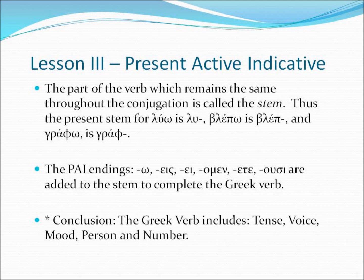Before we finish this lecture, let's go back over some important key facts. The part of the verb which remains the same throughout the conjugation is called the stem. The present stem for luo is lambda-upsilon, lu — it doesn't change: luo, luase, luay, luamen, lueta, luusi. The stem for blepo is blep: blepo, blepase, blepe, blepamen, blepete, blepusi. And the stem for grapho is graf: grafo, graface, grafa, grafamen, grafete, grafusi. The stems don't change for the present active indicative verbs — this is very important to note.